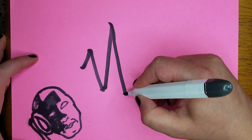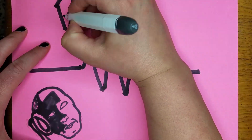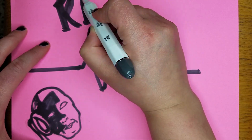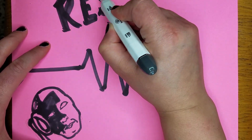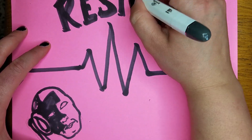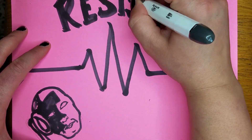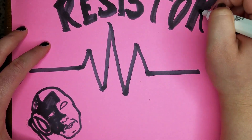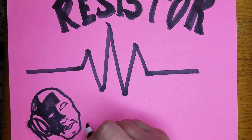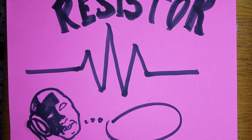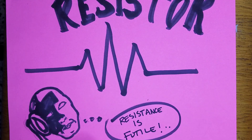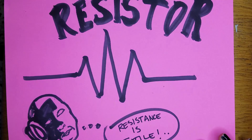Let's start out with symbols. This is the symbol in North America — which is where I am — for a resistor. It's just a nice little squiggly line. North America: we pronounce 'banal' wrong, we hate the metric system, and for some reason this is our sign for a resistor.